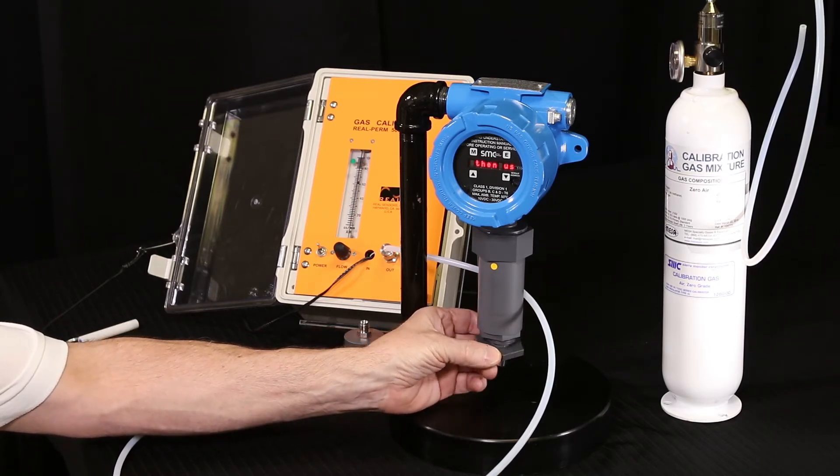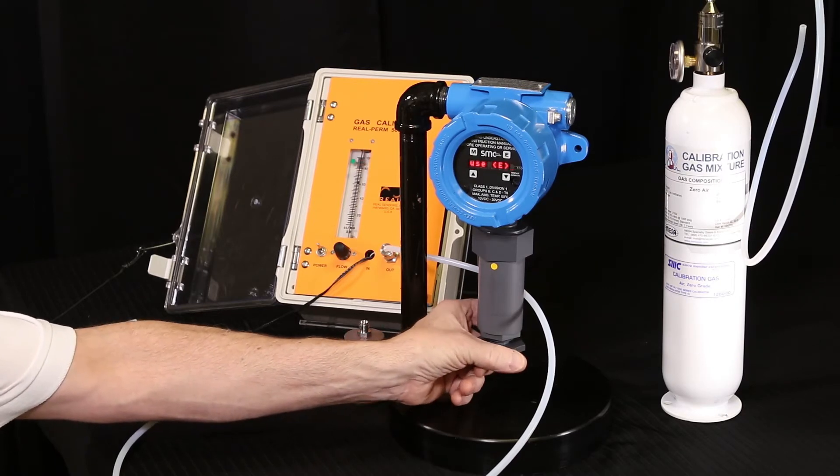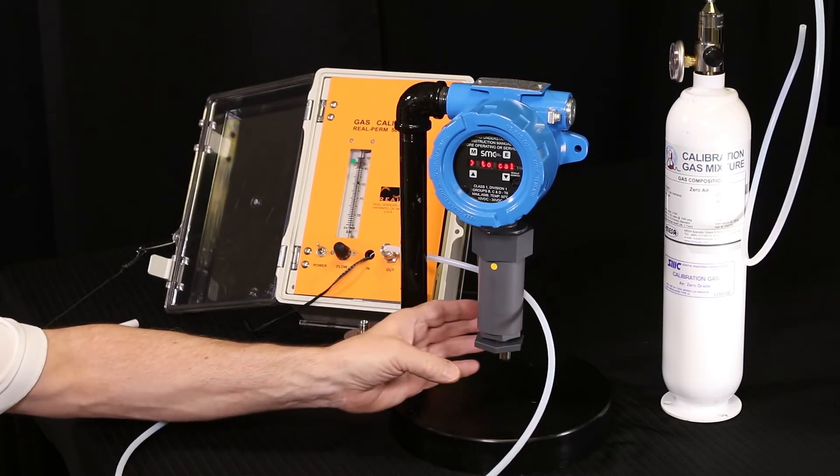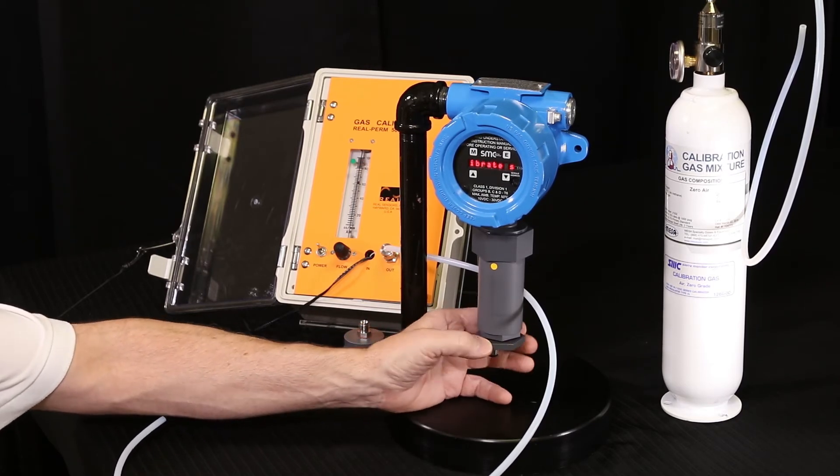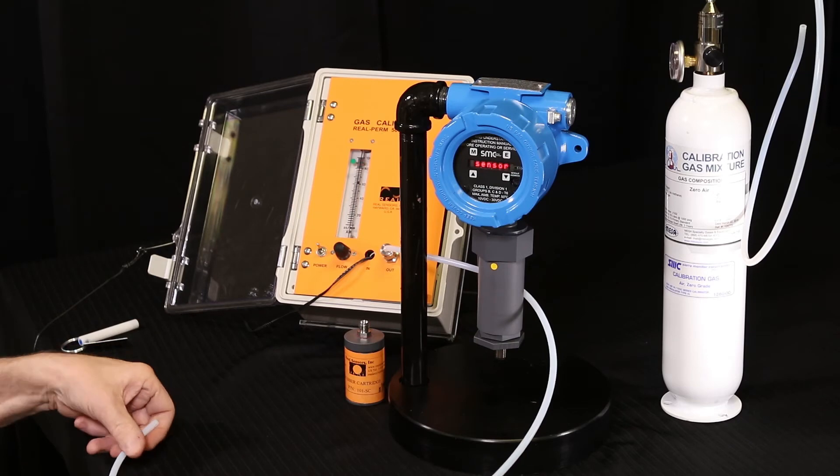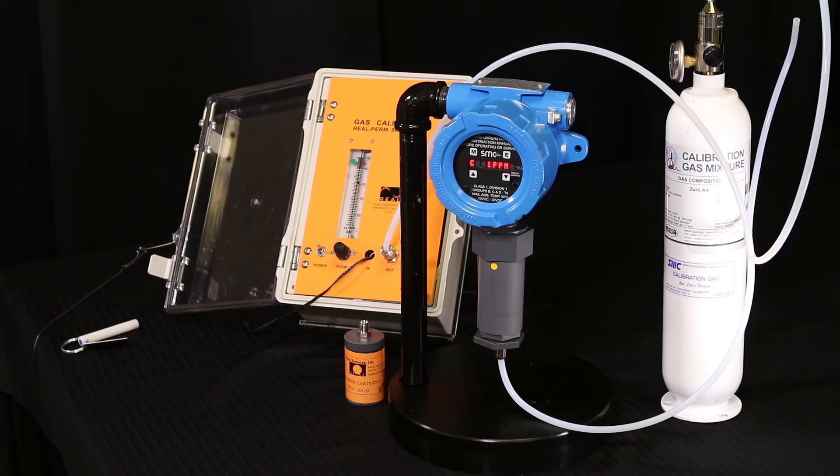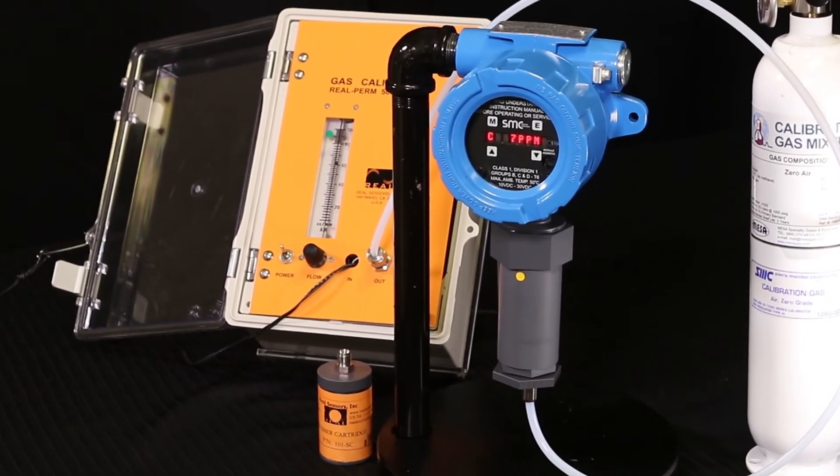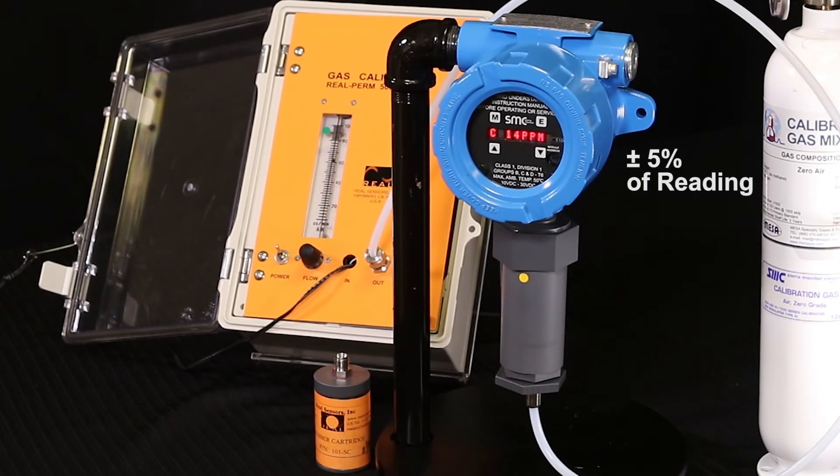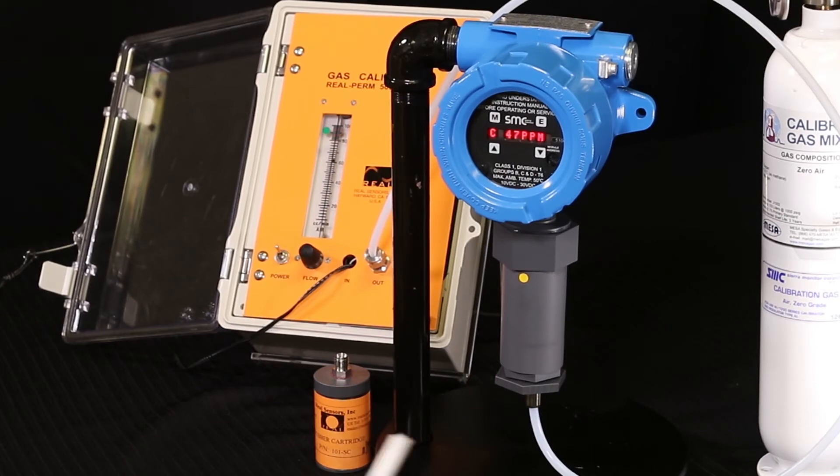Now you are ready to apply the span gas. Attach the gas delivery fitting underneath the detector to the sensor. Then connect the tubing from the permeation system, which is already running, to the delivery fitting and allow the gas to flow into the sensor. This will flow the span gas into the sensor at a predetermined rate. Observe the display so that the concentration remains stable, plus or minus five percent of the reading. Once stable, confirm the calibration by tapping the magnetic wand on the E key.